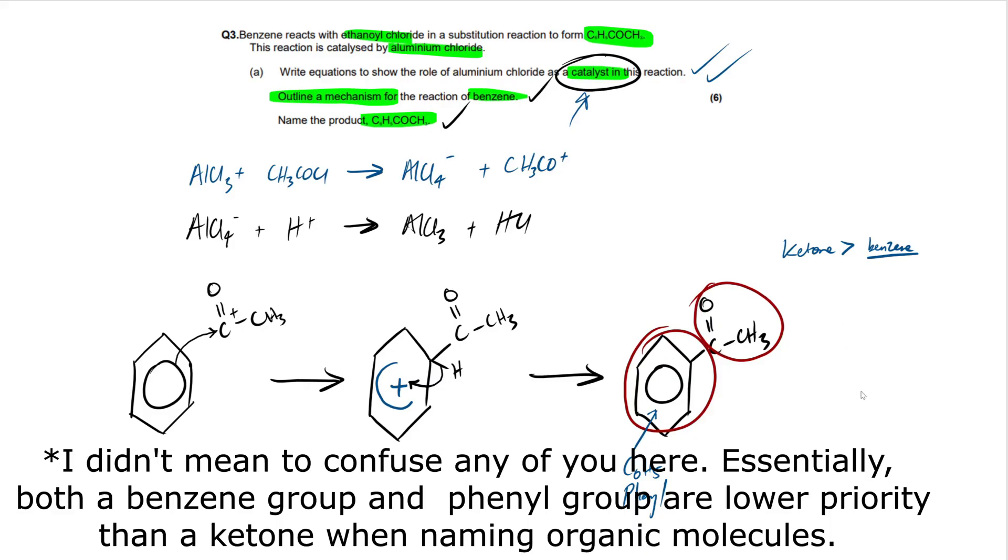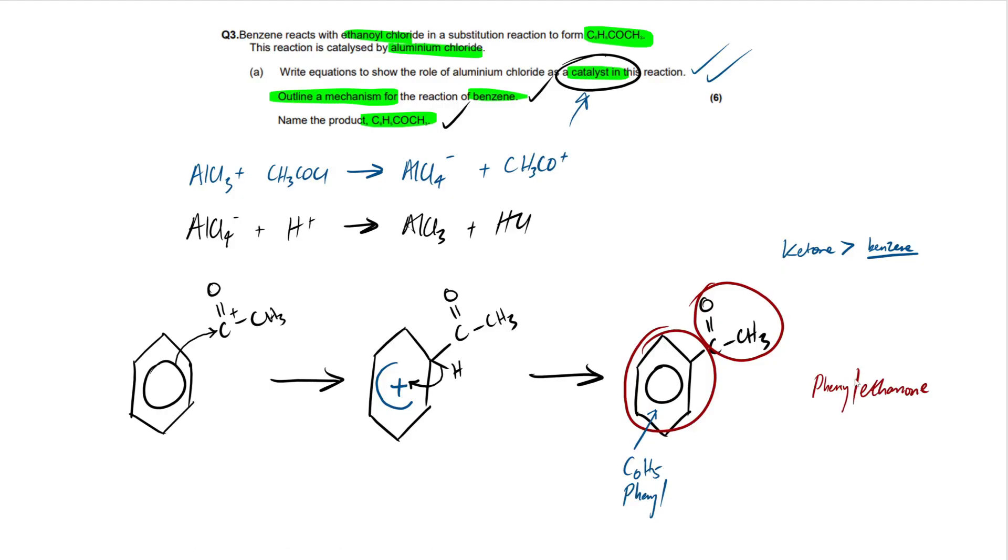So all we're going to do is put our ketone as the suffix here. So that's going to be how many carbons here? There's two carbons, so it's going to be ethanone. And all we have to do is chuck a phenyl in front of that. So that's our name right there: phenylethanone.